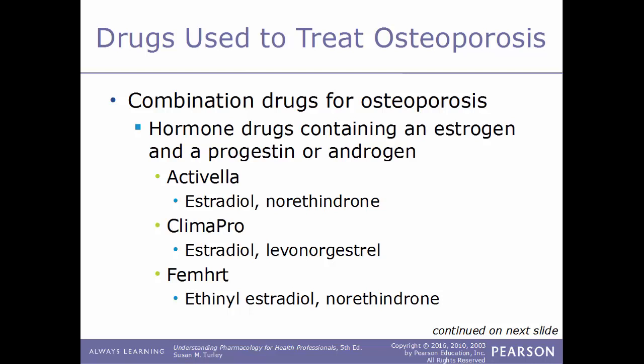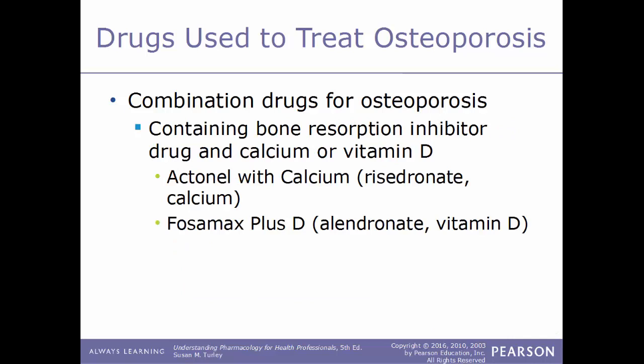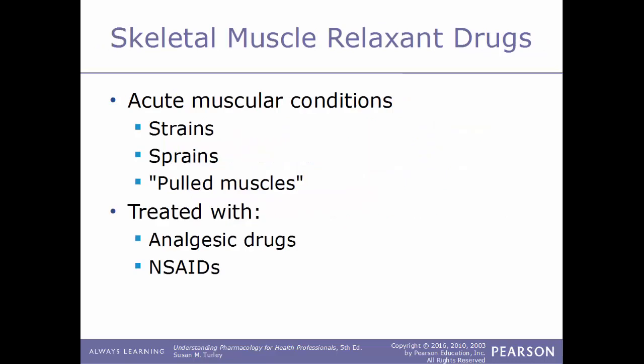Combination drugs are commonly used for osteoporosis and come in several types. Some combine a hormone drug containing an estrogen and a progestin or androgen — examples include Activella (estradiol and norethindrone), Climara Pro (estradiol and levonorgestrel), FemHRT (ethinyl estradiol and norethindrone), Premphase (conjugated estrogens and medroxyprogesterone), and Prempro (conjugated estrogens and medroxyprogesterone). Others combine a bone resorption inhibitor with calcium or vitamin D — examples include Actonel with Calcium (calcium and risedronate) and Fosamax Plus D (vitamin D plus alendronate).